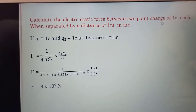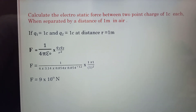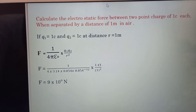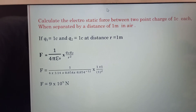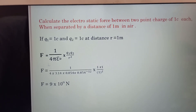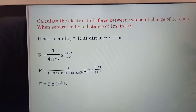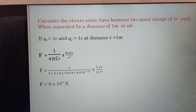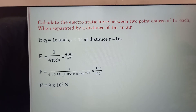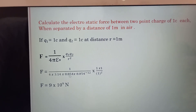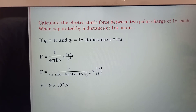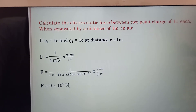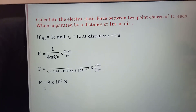Calculate electric force between two point charges. If charges of 1 coulomb each are separated by a distance of 1 meter in air: Q1 = 1 C, Q2 = 1 C, R = 1 m. Using F = (1 / 4πε₀) · (Q1·Q2 / R²), substituting values: F = 1 / (4 × 3.14 × 8.854 × 10⁻¹² × 1 / 1²). Simplifying, we get F = 9 × 10⁹ N.